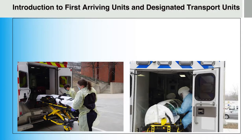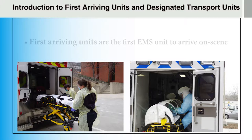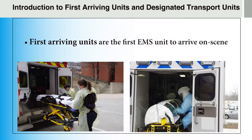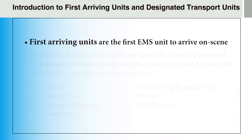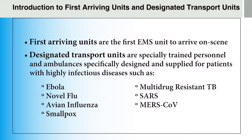Let's begin with some definitions of first arriving units and designated transport units. First arriving units are often the first EMS units to arrive on scene and would alert dispatch and medical control to the possible presence of a highly infectious disease such as Ebola. Designated transport units are specially trained personnel and ambulances specifically designed and supplied for patients with highly infectious diseases. These units would assume patient care from the first arriving units and transport the patient under investigation to the designated hospital.